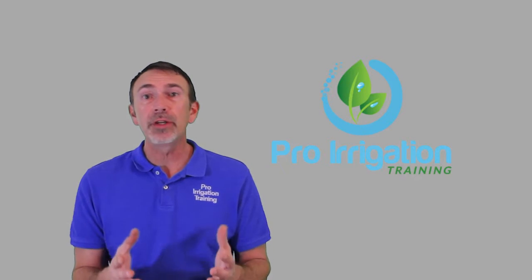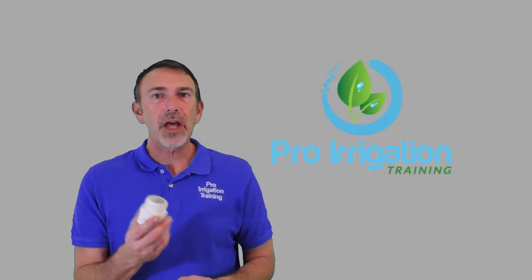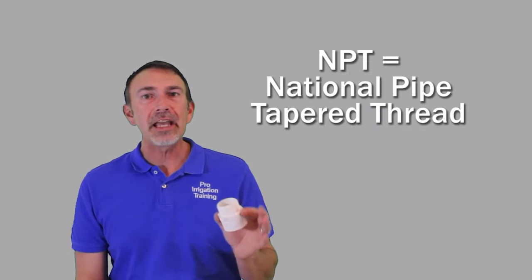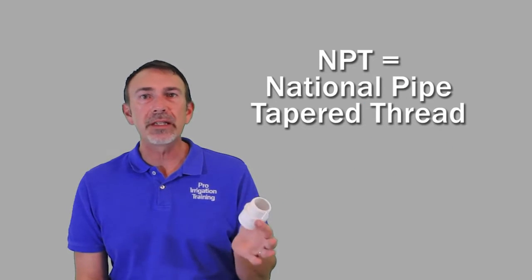But I want to warn you that there's two different kinds of threads that we're dealing with. The first type is called NPT, National Pipe Tapered Thread, just abbreviated to NPT. Some people just say National Pipe Threads or Tapered Threads, but whatever it's called, basically you're going to find this on PVC, copper, galvanized steel, stainless steel, and iron.